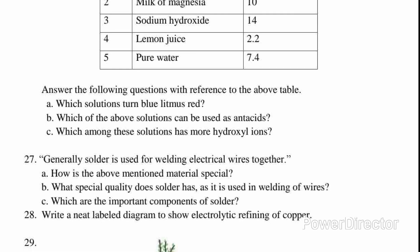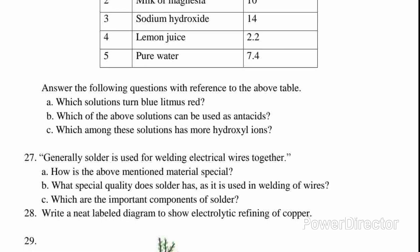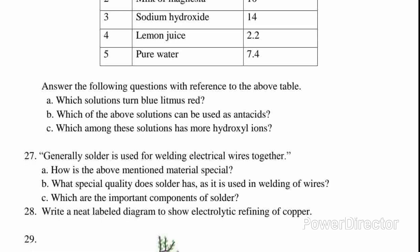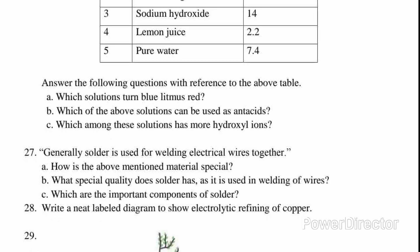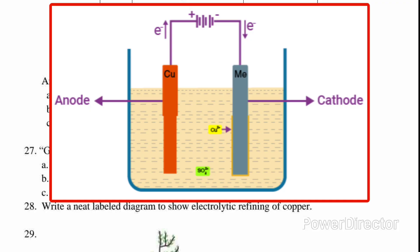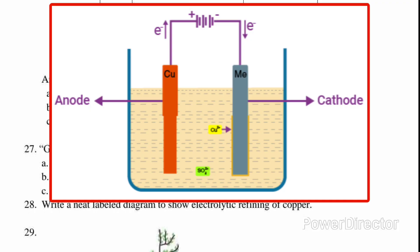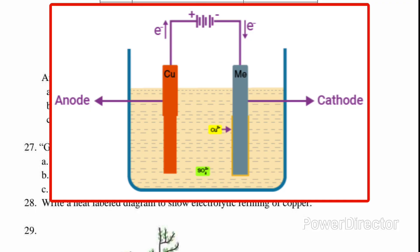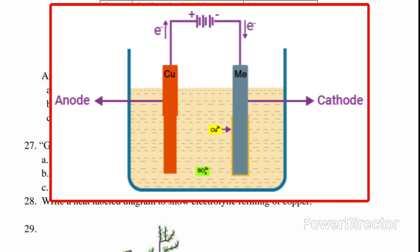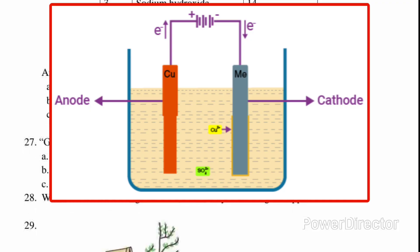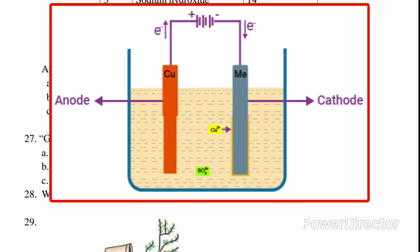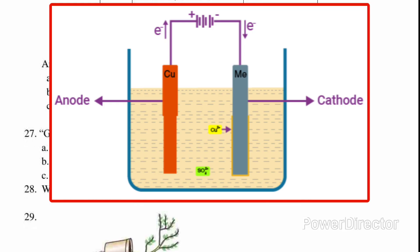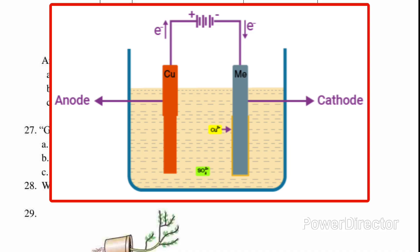Question 28: Write a neat labelled diagram to show electrolytic refining of copper. Answer: The diagram shows cathode, key, anode, Cu, acidified copper sulphate solution, tank, impurities, and anode mud.